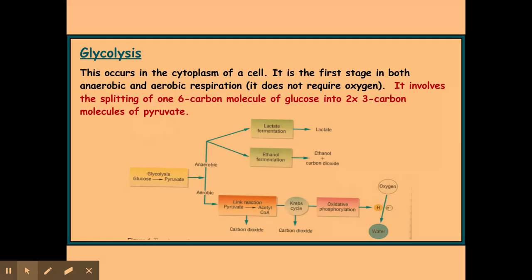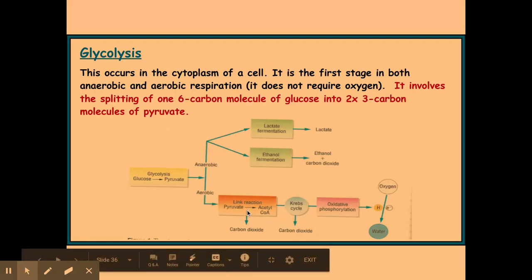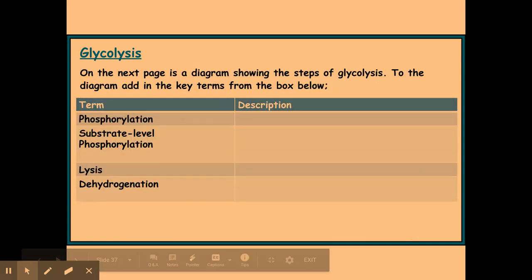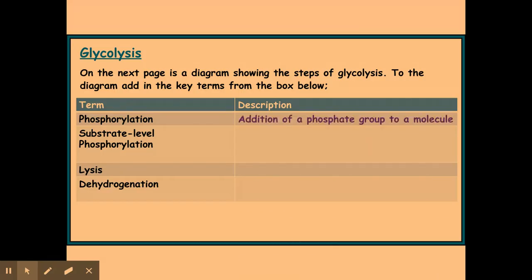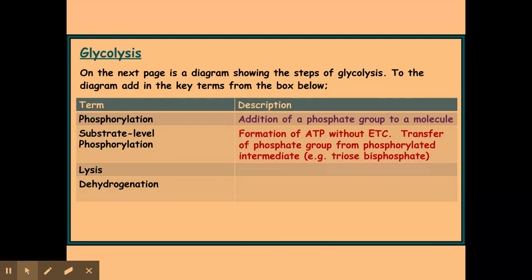So we need to know some terms involved here in glycolysis, which are very popular throughout the whole of the respiration topic to be honest. So phosphorylation: this is where I have an addition of a phosphate group to a molecule. Now this phosphate group usually comes from ATP, but not always. We have substrate level phosphorylation, and this is the formation or production or synthesis of ATP without the use of an electron transport chain.